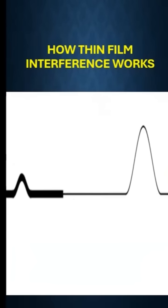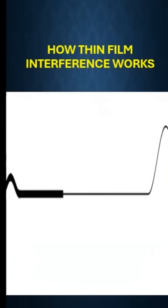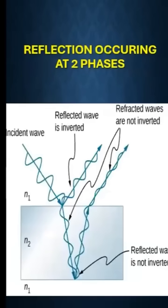When these two waves interfere with each other, it gives constructive and destructive interference, as in this case.